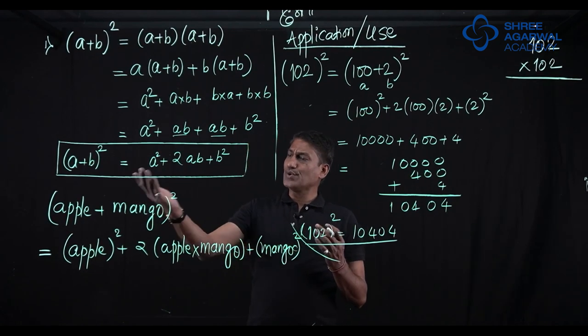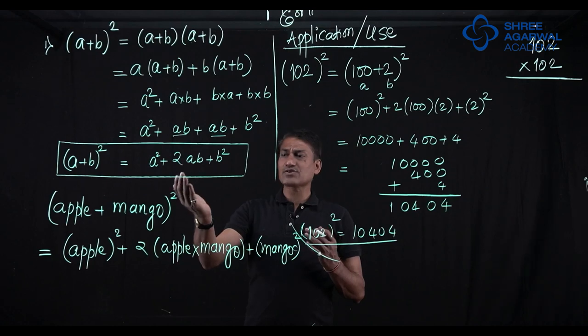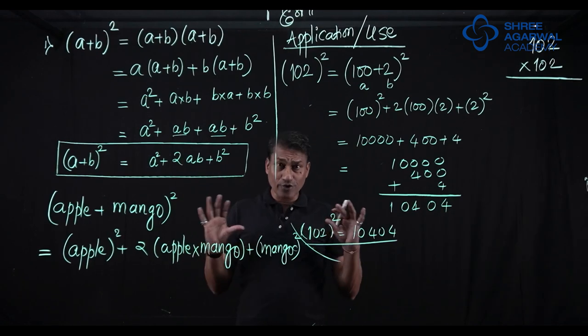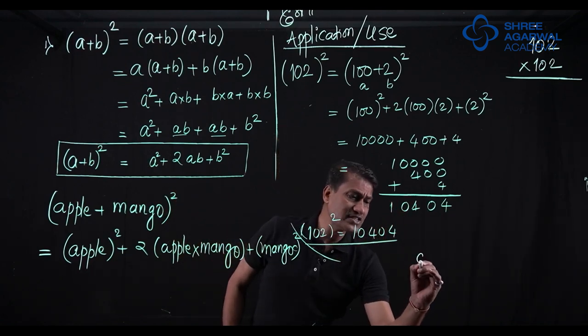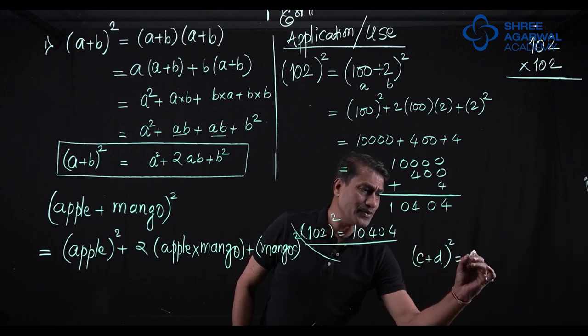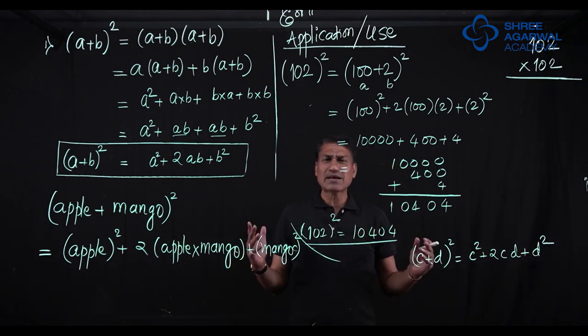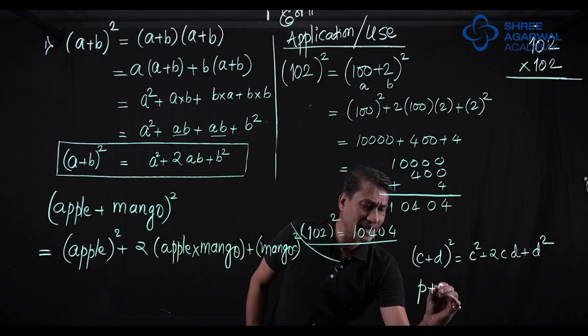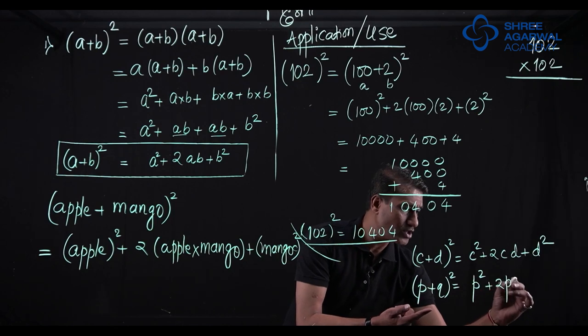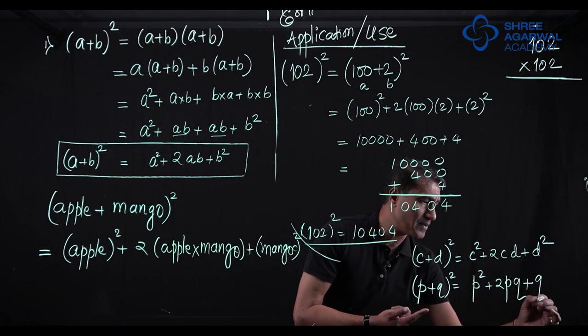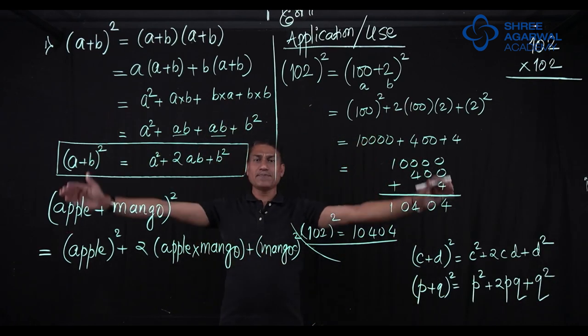I would repeat it again. A plus b bracket square is equal to a square plus 2ab plus b square. And of course, if this changes, do not be worried. If it is c plus d bracket square, it would be obviously c square plus 2cd plus d square. Anything may come. If it is p plus q bracket square, it would be first term square plus 2 times first term into second term plus second term square.